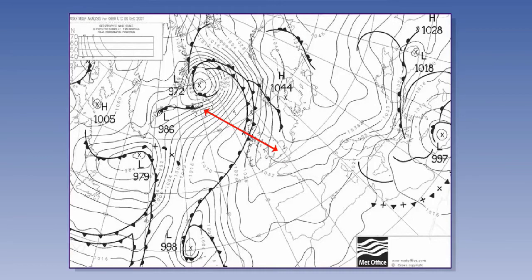If we look at the isobar chart shown here, we can see that if we were to travel from the UK to Iceland at mean sea level, the air pressure above us will change from around 1036 millibars, or hectopascals, to approximately 996 millibars or hectopascals. The matter is further complicated because the rate at which temperature changes within the air will vary considerably, and this affects the air pressure also.